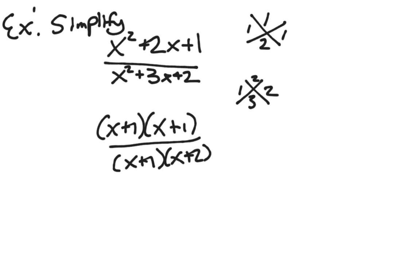And now, I'm going to check to make sure I have multiplication happening. I have x plus 1 multiplying x plus 1. And down on the bottom, I have x plus 1 multiplying x plus 2. And I notice that I have this unit, x plus 1, in both the top and the bottom. So I'm going to cancel them out to get x plus 1 over x plus 2.